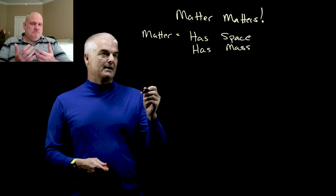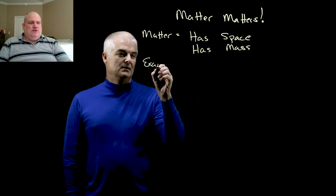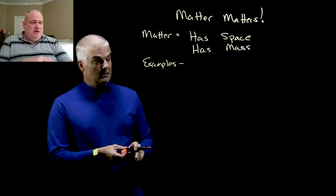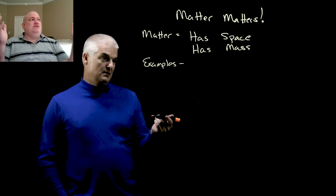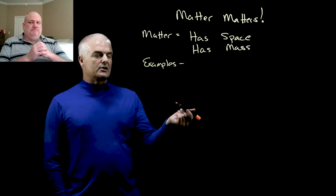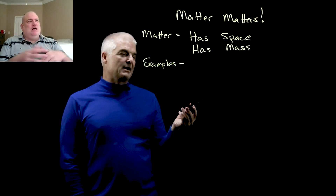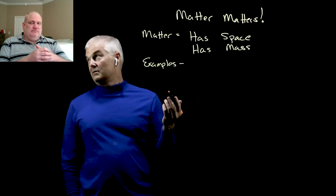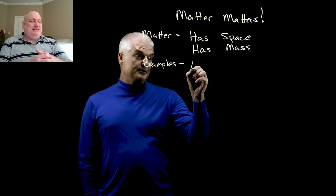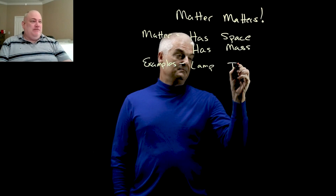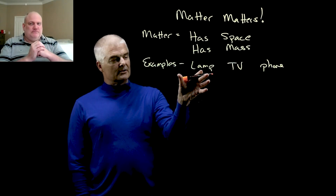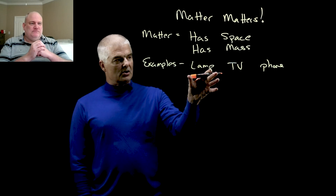What are some examples of matter? Well, do you want to talk about solid matter? The reality is anyone, as you're looking at the video at home, you could point to anything in your room and go, that's made up of matter. So, like what? Give me an example. Just something that you might find in a typical teenager's room. A lamp? I would guess a TV. How about a phone? I mean, everyone has a phone, right? If you think about those, in my mind those are all solids.